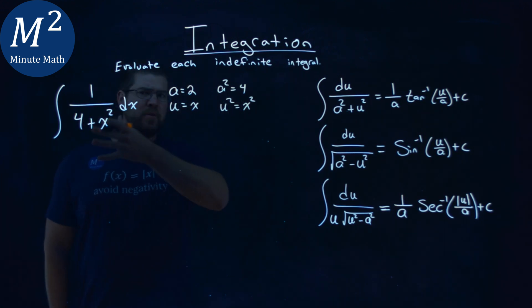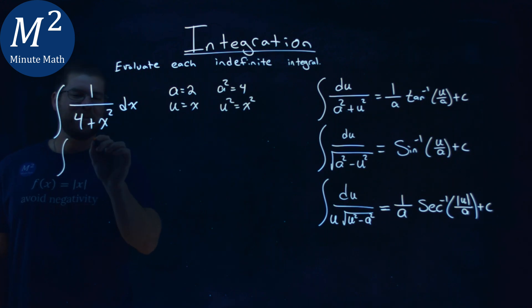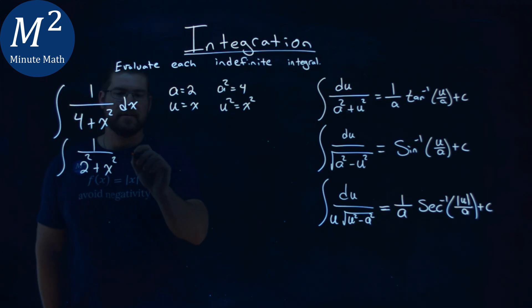So let's go rewrite this now in terms of our 2 and x instead of 4 and x squared. You'll see. So another integral here. Instead of 4, I'm going to put a 2 squared plus x squared and the dx.